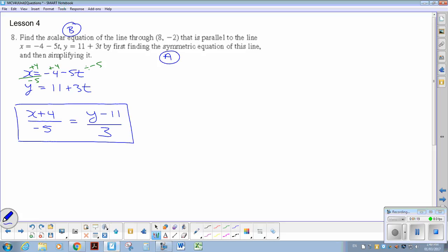The piece of information we really need in order to find our scalar over here is we need to know our normal vector. And to find a normal vector, we need our direction vector. So we can see that our direction vector from the given information is negative 5, 3.